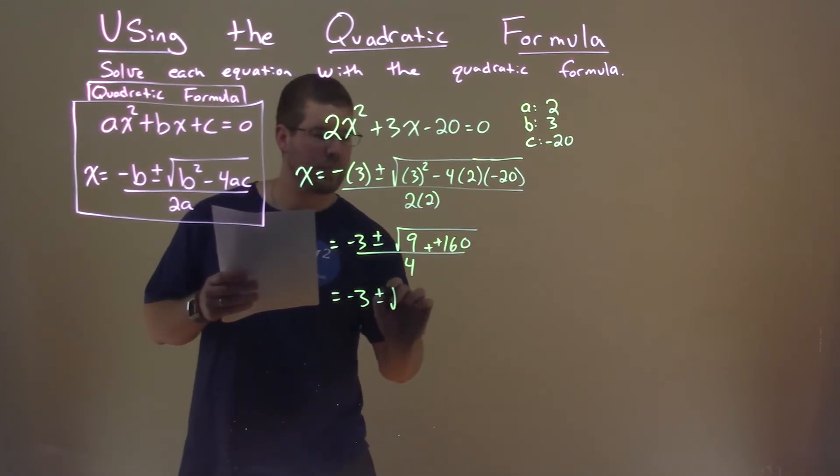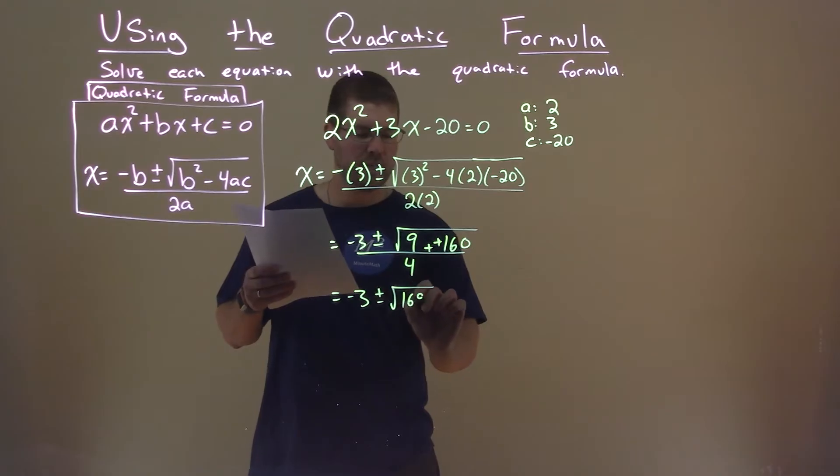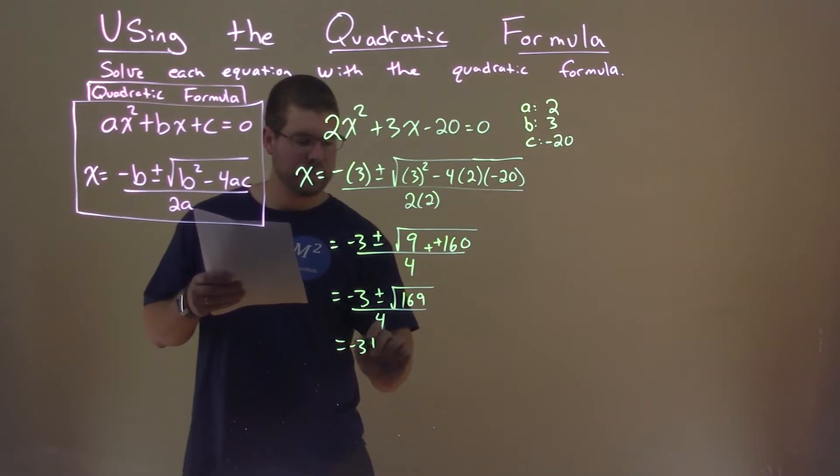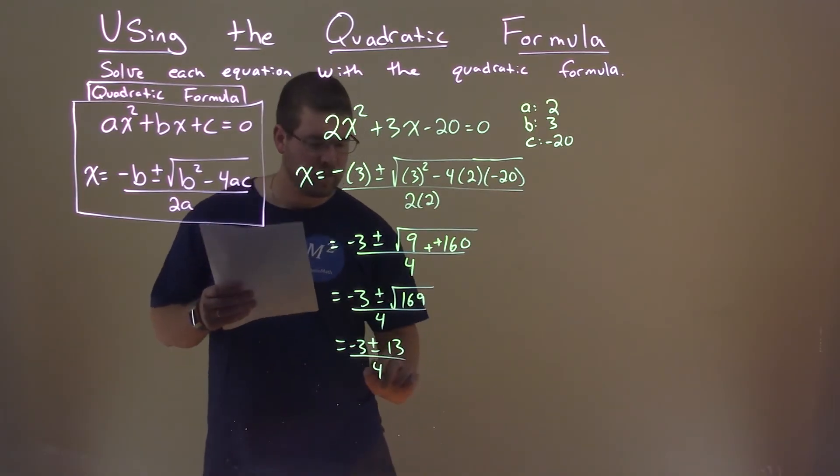Simplify this out a little more. 9 plus 160 is 169, all over 4. The square root of 169, if you know that off the top of your head, is 13.